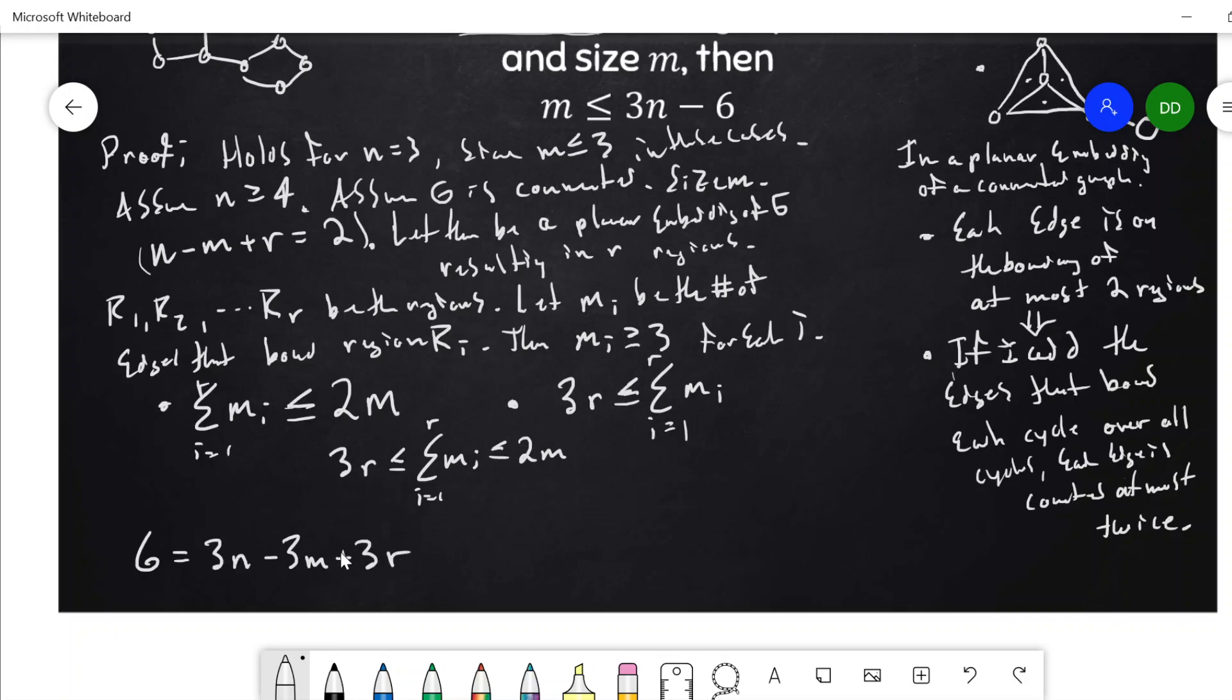So why would we multiply everything by three? Because I have this three r figure, which I'm being told is, or which I've deduced is at most twice the number of edges.